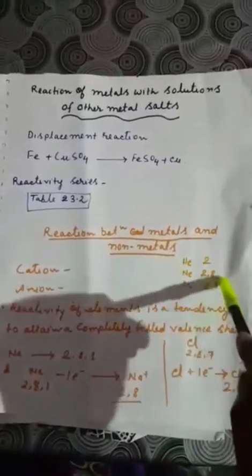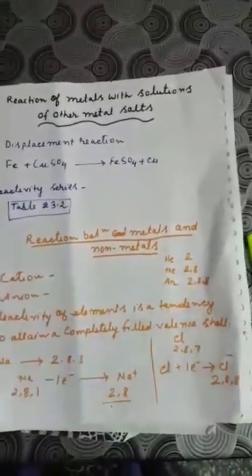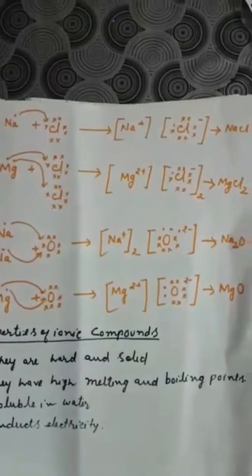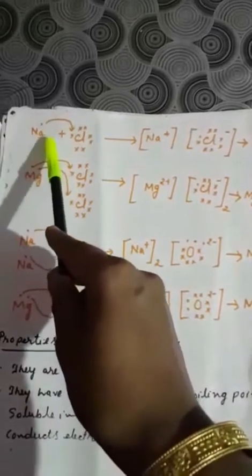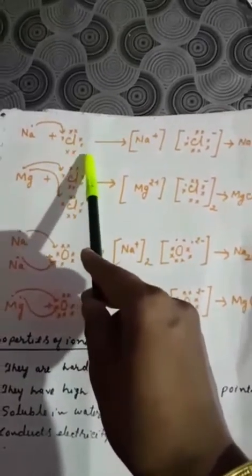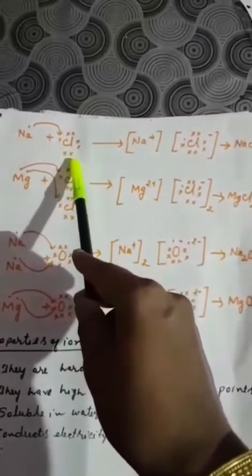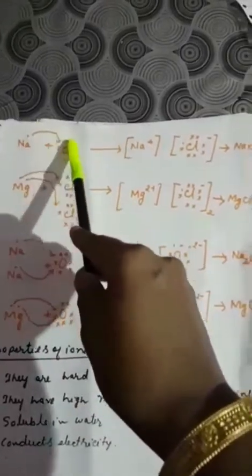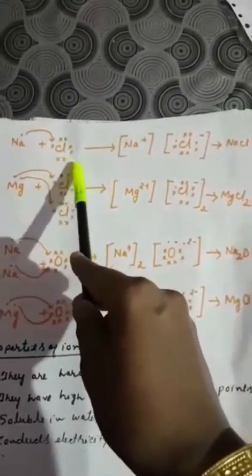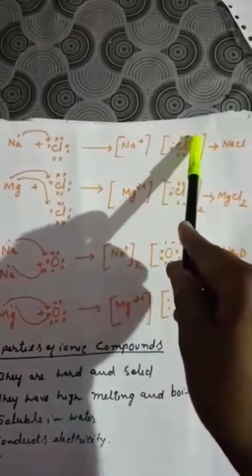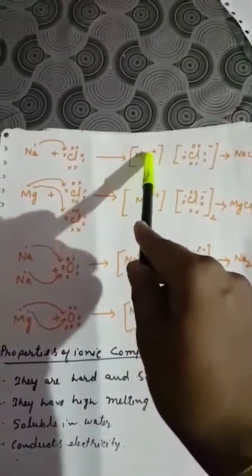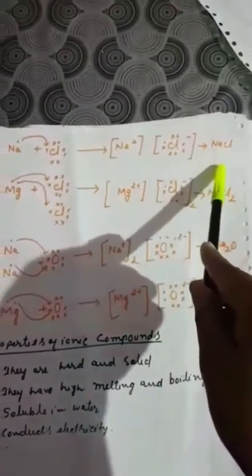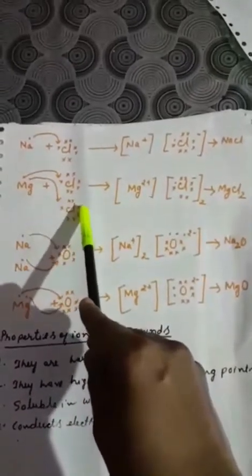Sodium has one electron in its outer shell and has a tendency to give it away. Chlorine has seven electrons in its outer shell, so it can take one. One electron transfers from sodium to chlorine — sodium becomes positive and chlorine becomes negative. This is how sodium chloride is formed. For magnesium chloride, the formula is MgCl2. Magnesium has two electrons in the outer shell, so it gives one to each chlorine atom.